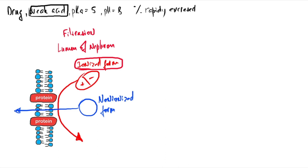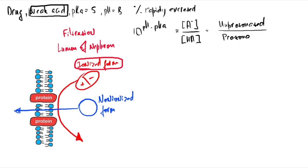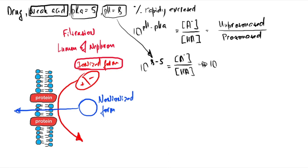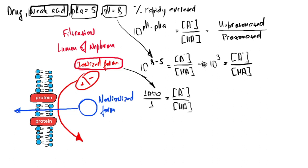Using the Henderson-Hasselbalch equation for acids, where the numerator is the unprotonated (charged) form and the denominator is the protonated (uncharged) form: 10^(8 − 5) = 10^3 = 1000/1, giving a ratio of ionized to non-ionized of 1000:1. So we have 1000 parts ionized (99.9%) and 1 part non-ionized (0.1%). Total parts = 1001; x = (1000 × 100) / 1001 = 99.9%.